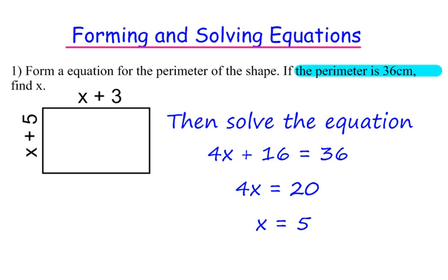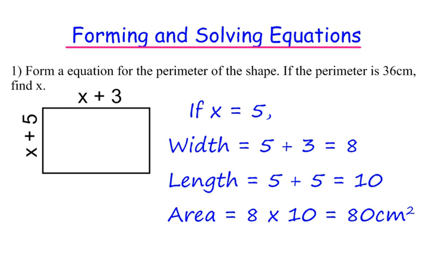There could even be a part c to this question asking us about the length or the width or the area. So if x is 5, then the width is 5 plus 3, which gives us 8. The length is 5 plus 5, which gives us 10. And the area would be 8 times 10, which would be 80cm squared.